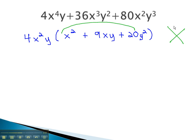a times c is 20, and add to 9. We can see those numbers will be 4 and 5.